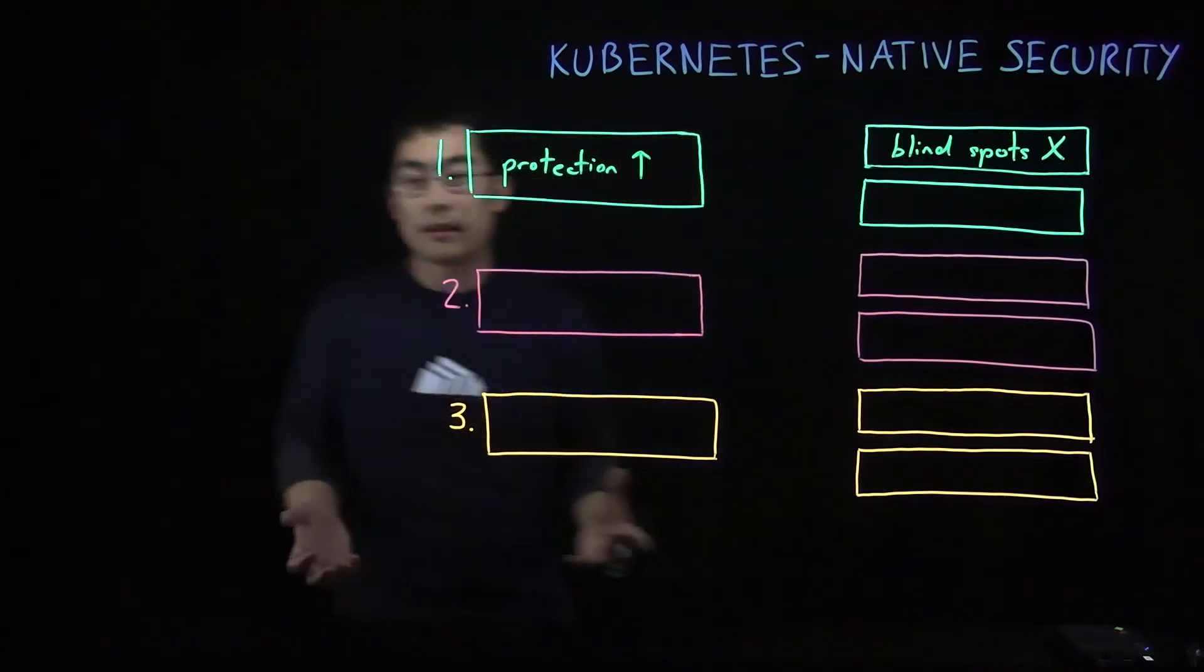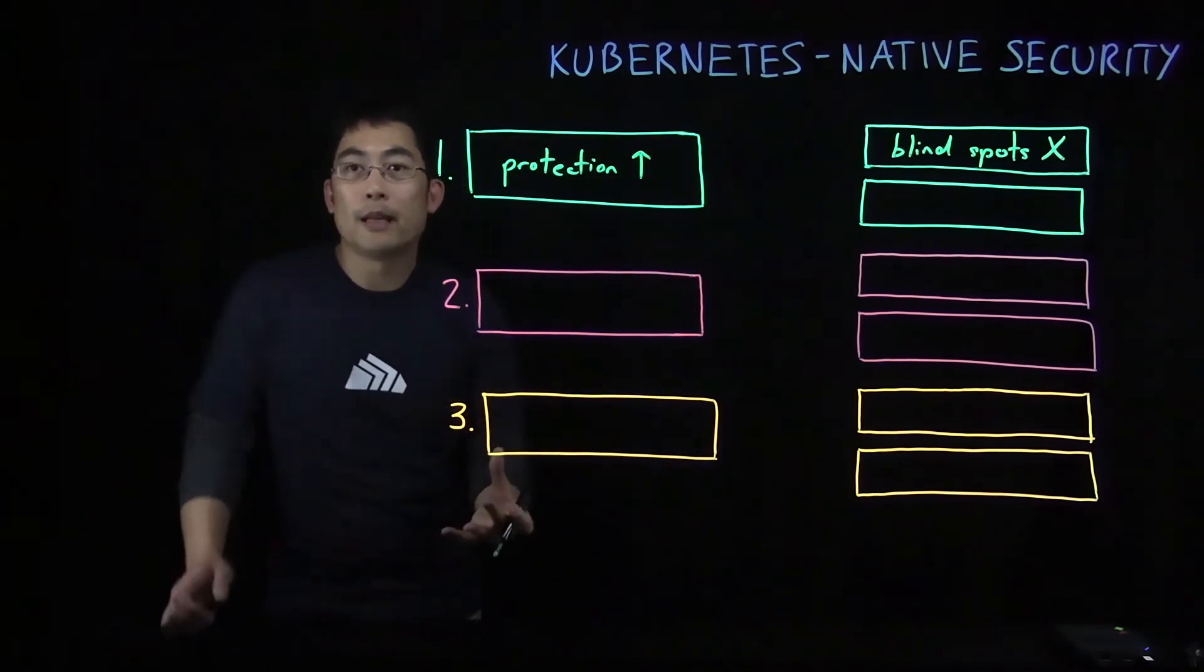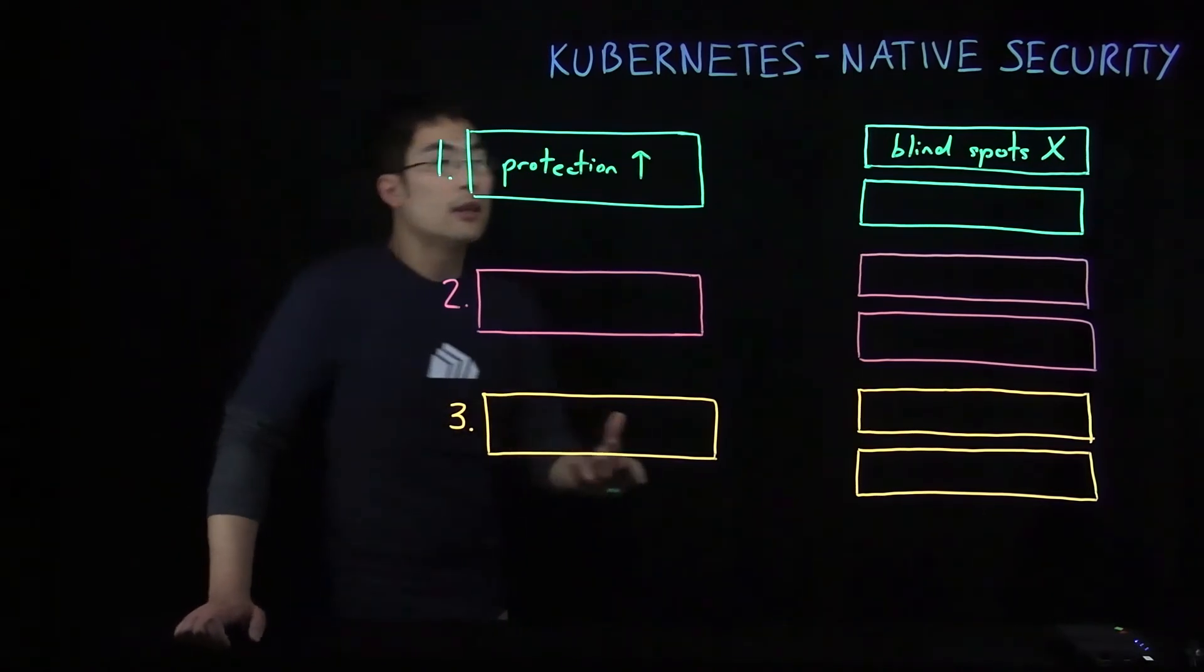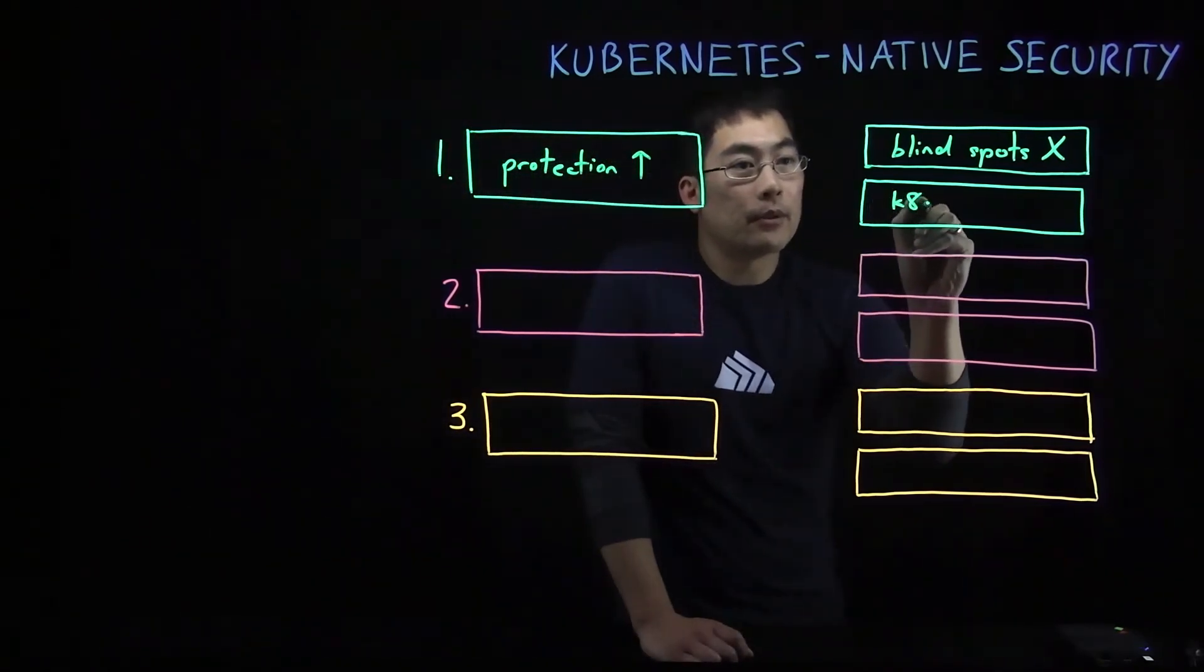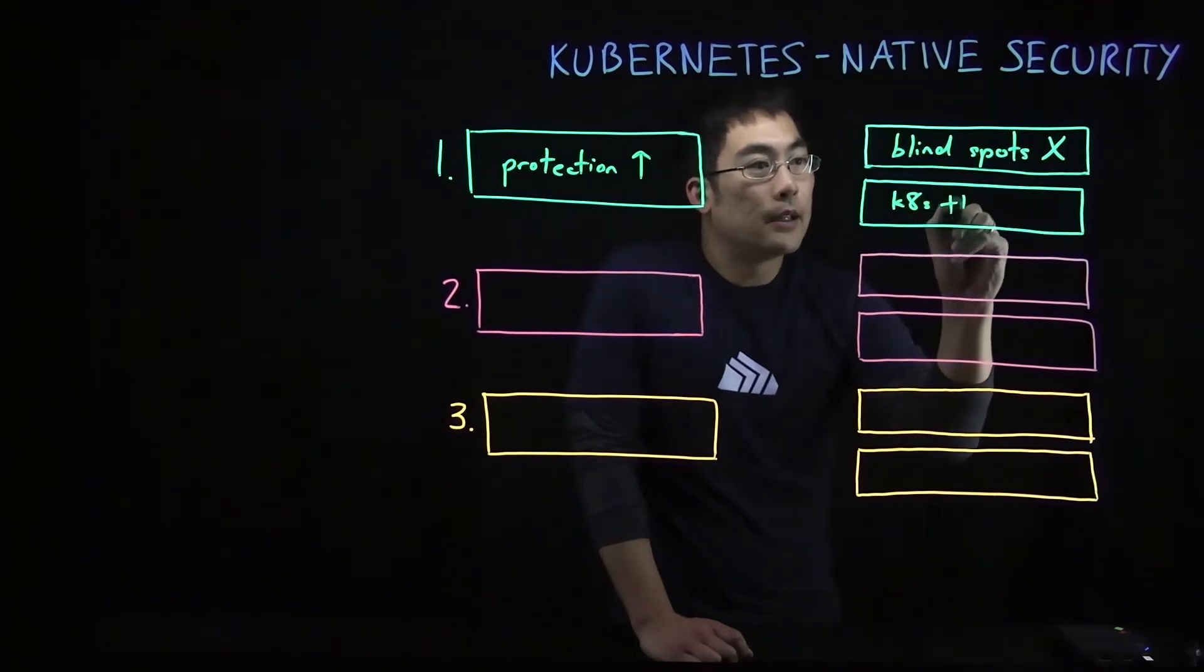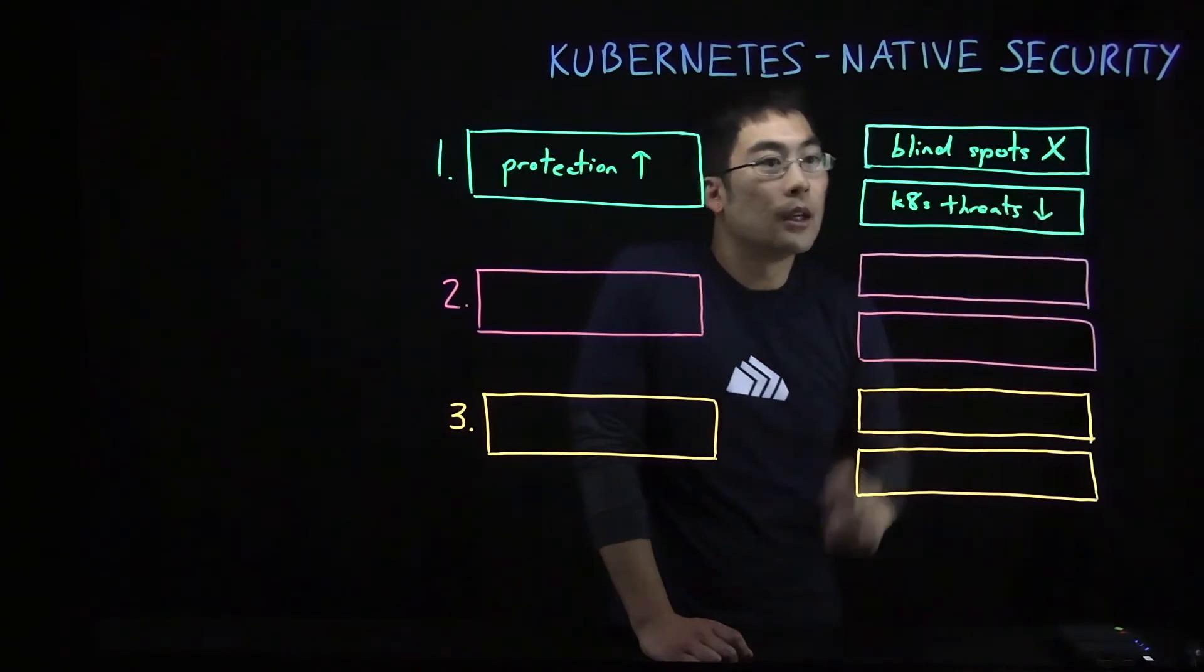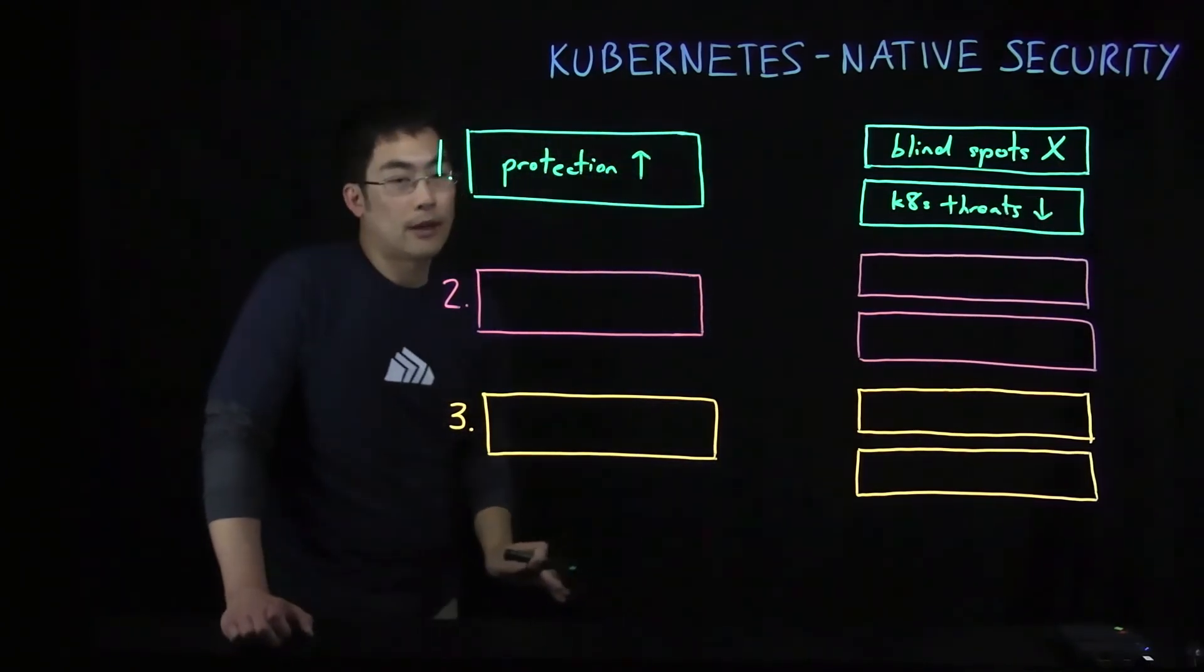Second is that Kubernetes security helps you discover critical vulnerabilities that are specific to Kubernetes, and which can also give rise to threats that are unique to Kubernetes. For example, we've seen threat vectors that arise from running the Kubernetes dashboard. Kubernetes native security can help you reduce your exposure to these types of threat vectors and attack vectors.